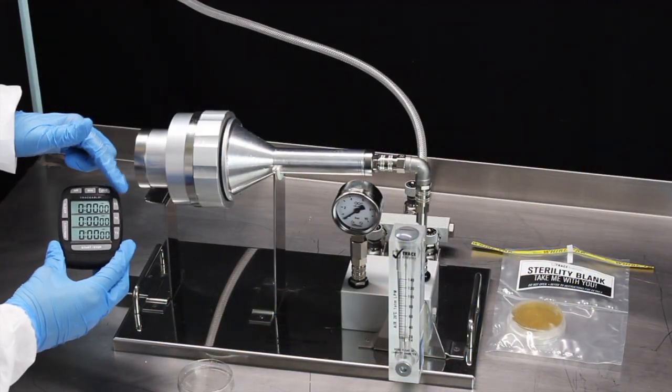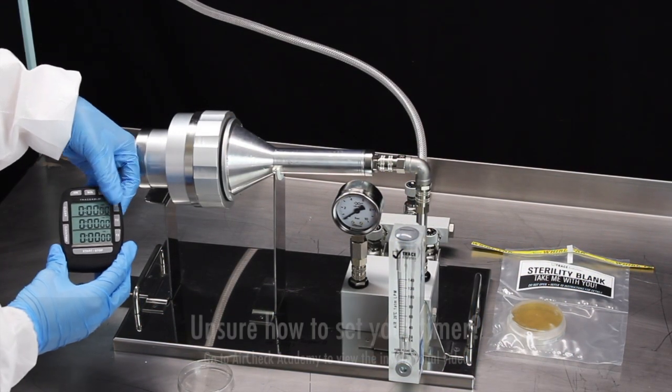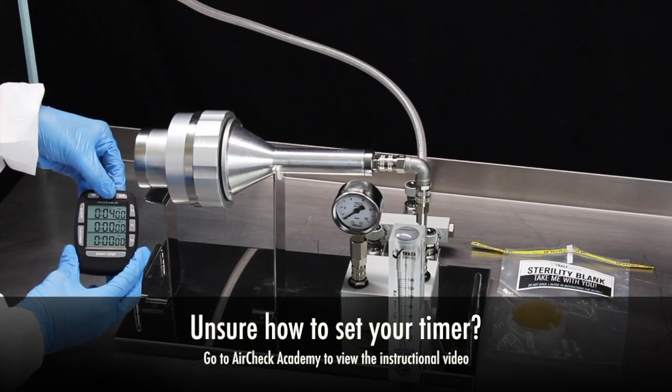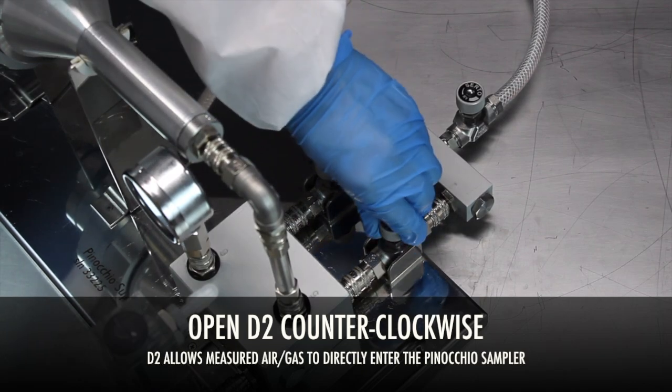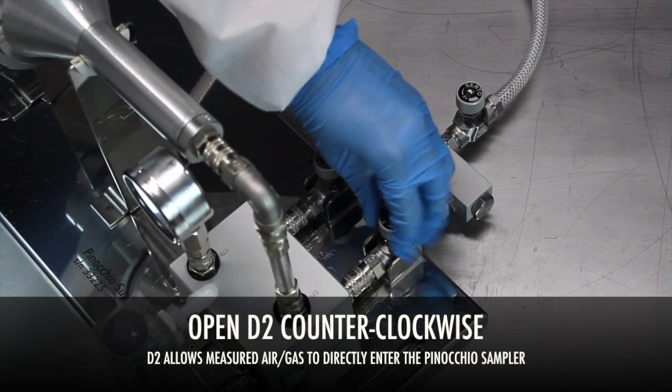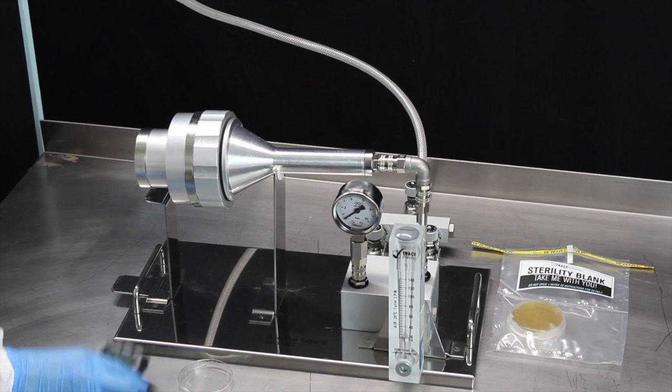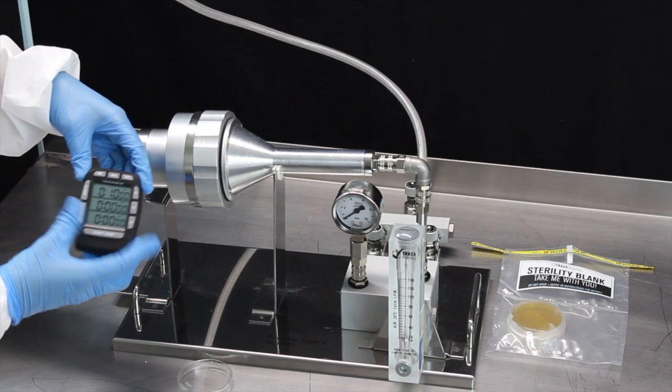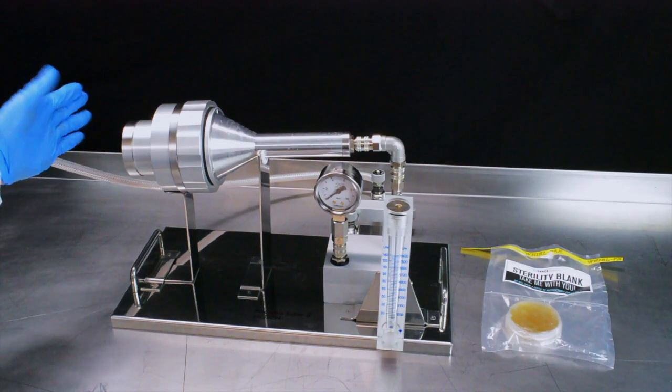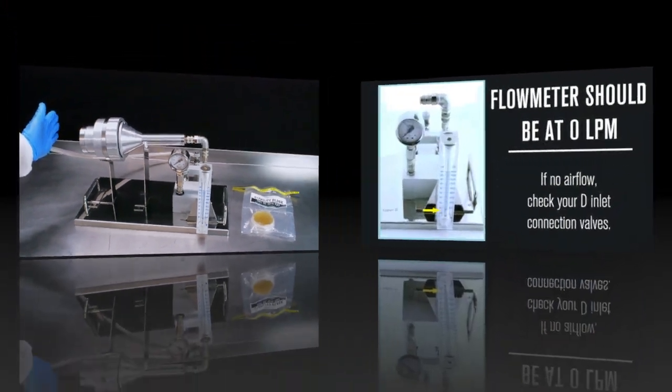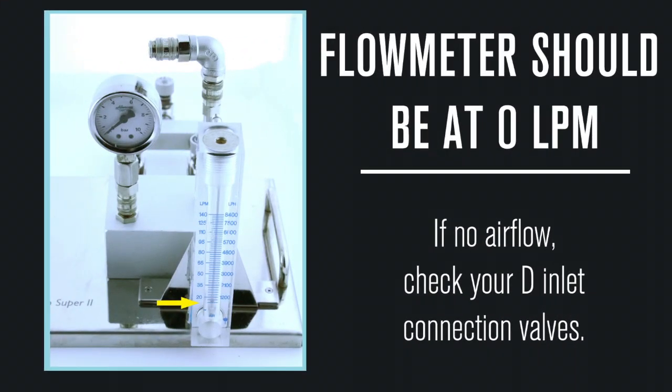Set the timer for 10 minutes, which is required to achieve 100 liters total volume of air at 100 liters per minute. Turning the control valve counterclockwise, completely open D2 of the air inlet connection. Start the timer. To make sure your setup is correct, put your hand behind the funnel. If you do not feel air on your hand, the air is not flowing through the sampler and you need to check your D air inlet connection valves. The flow meter should be at zero when the air is flowing properly through the horn.